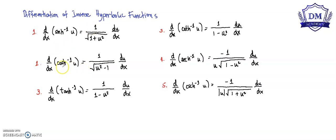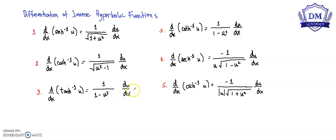The derivative of the inverse hyperbolic cosine of u is equal to 1 all over the square root of u squared minus 1, times the derivative of u with respect to x. The derivative of the inverse hyperbolic tangent of u is equal to 1 all over 1 minus u squared, times the derivative of u with respect to x.